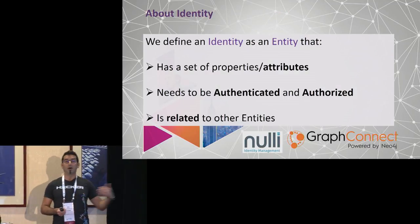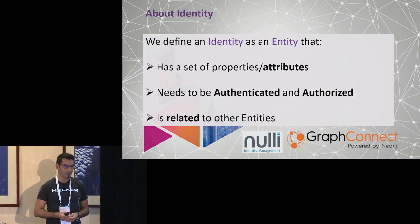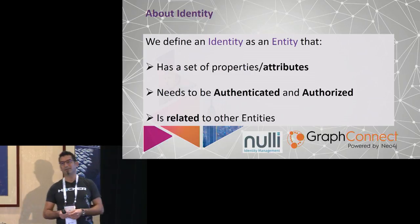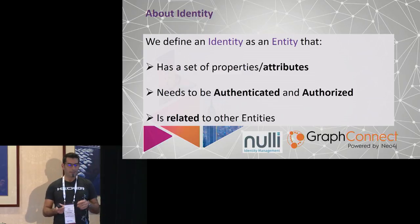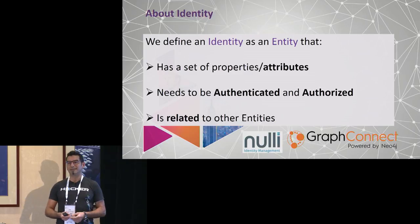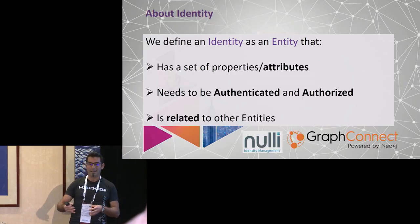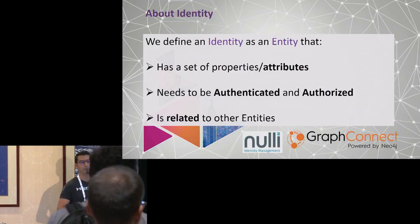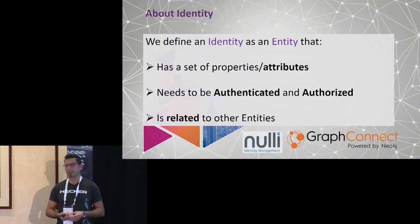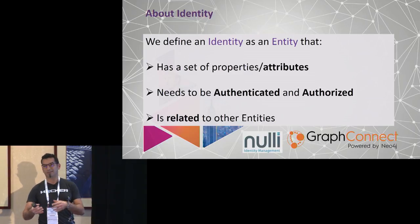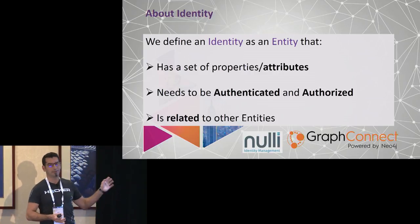This is basically how we define identity at Nolly, and we think it applies to a lot of cases. First, an identity is something that has a set of properties. Second, an identity is an entity that needs to be authenticated and authorized — it's an actor that performs an action, and that action needs to be authenticated and authorized. That's probably the most important one. The third is that identities are always related to other entities. An isolated identity is not really interesting.